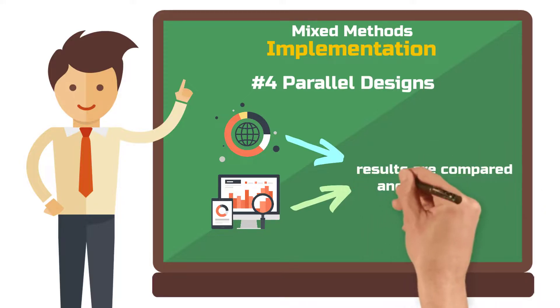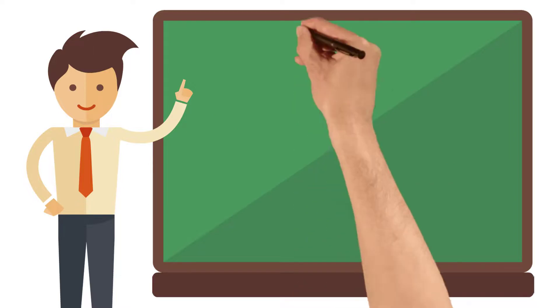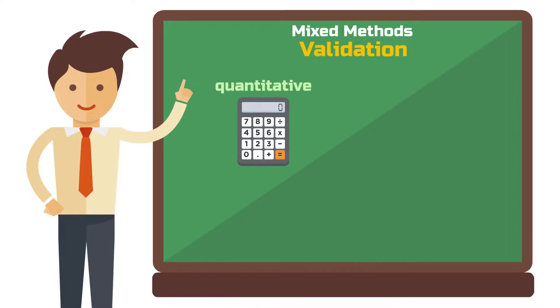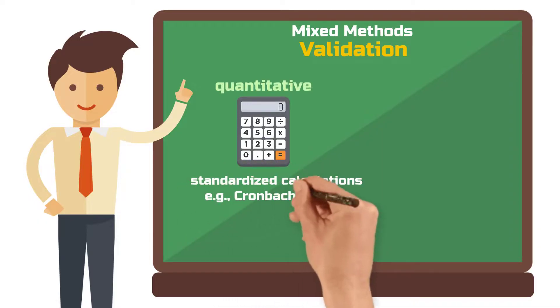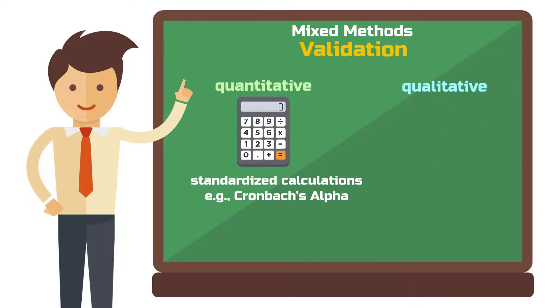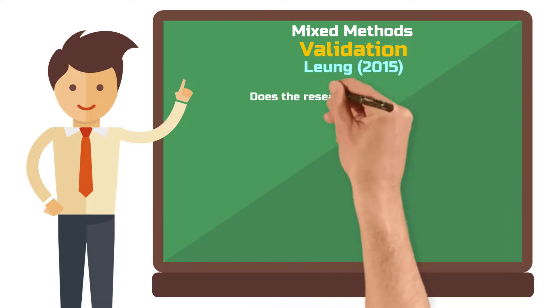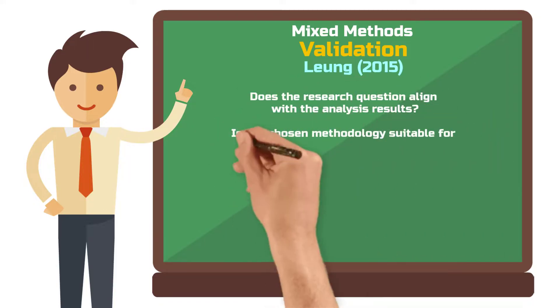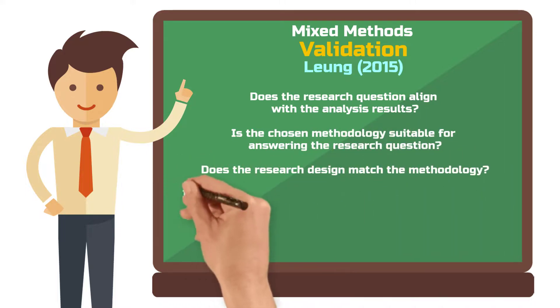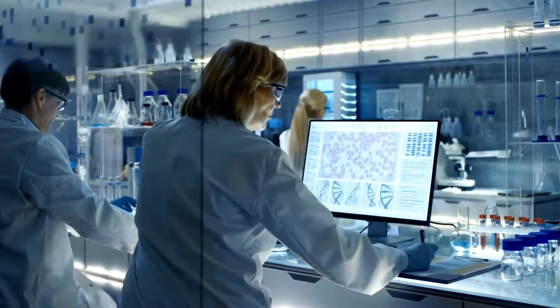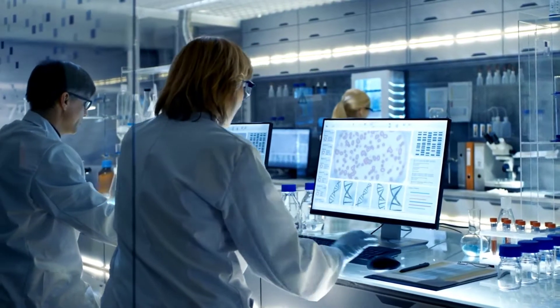For mixed methods research, validating the results is an important quality criterion. For quantitative data analyses, there are well-standardized calculations that can validate constructs using SPSS or similar software. For qualitative data, the validation process is much softer and there is less consensus on what is standard. Criteria like these could apply: Does the research question align with the analysis? Is the chosen methodology suitable for answering the question? Does the design match the methodology? Is the sample appropriate? Do results and conclusions fit the sample and context? You apply the same techniques for validity and reliability as you would for one method — but now you do it for two. This is why mixed methods often means more workload, but in the end you also have a more valuable study.